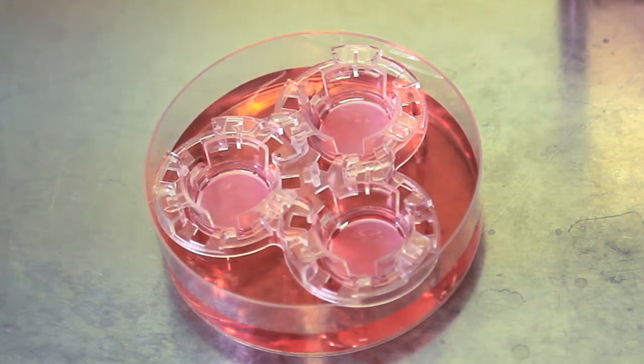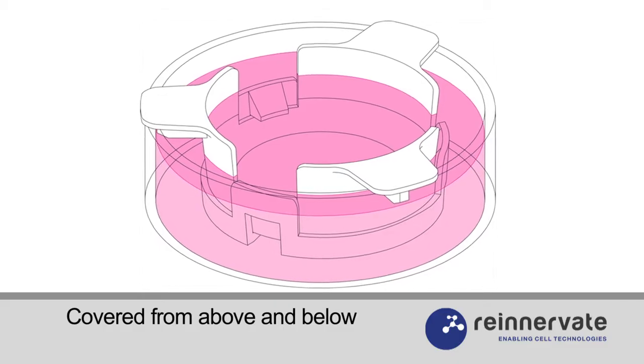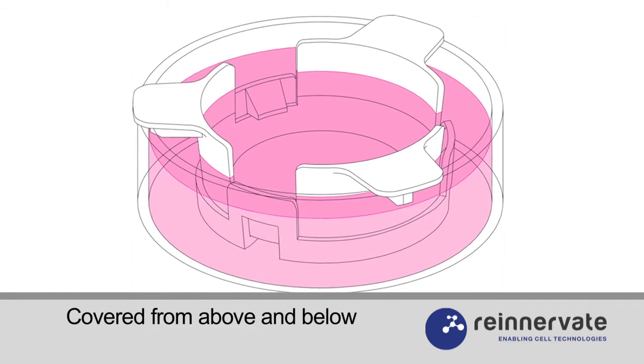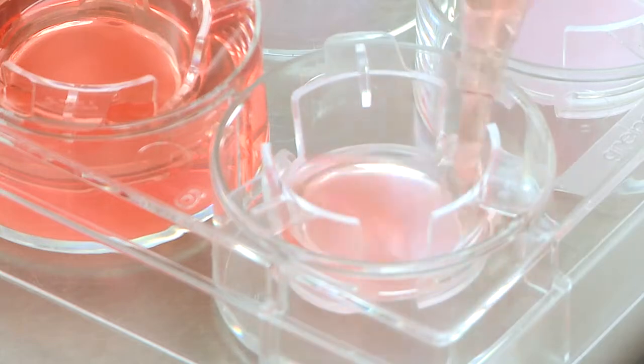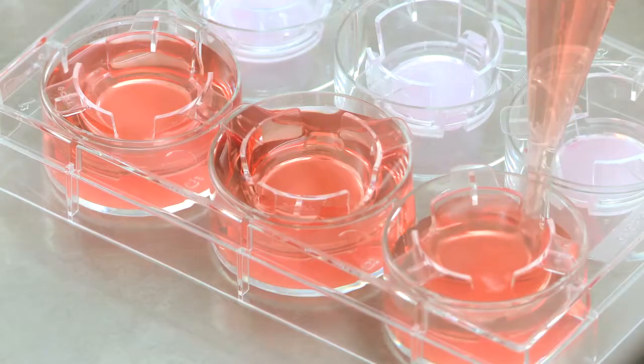For routine three-dimensional growth, the Alvatex membrane should be covered by medium from above and below. For example, when using a well insert in a 6-well plate, the volume of medium should be between 6 and 10.5 milliliters depending on the metabolic activity and proliferation rate of your cells.